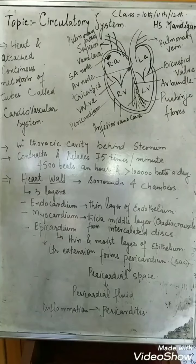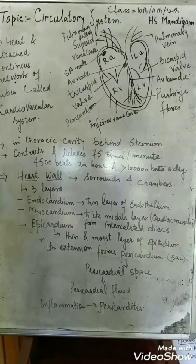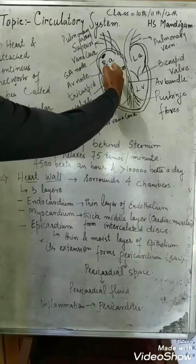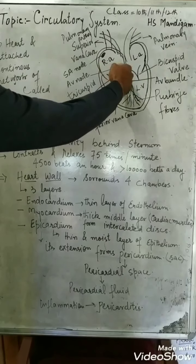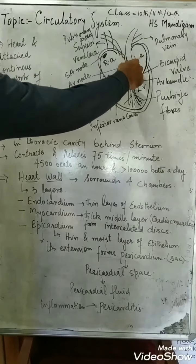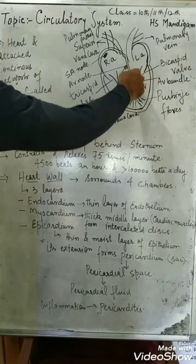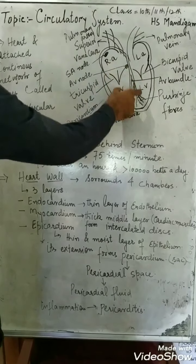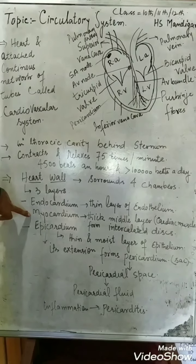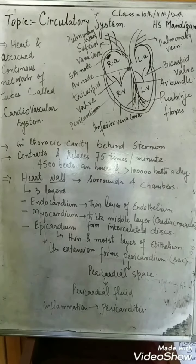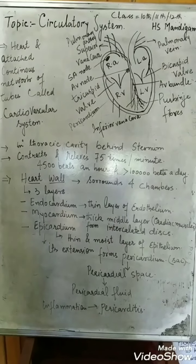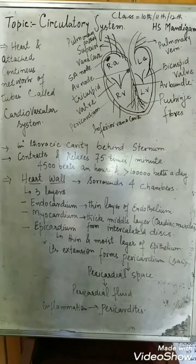The endocardium is a thin layer of endothelium which lines the chambers from the inner side — it lines all four chambers. The second layer is the myocardium, which is a thick middle layer that constitutes the cardiac muscles.